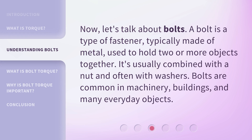Now let's talk about bolts. A bolt is a type of fastener, typically made of metal, used to hold two or more objects together. It's usually combined with a nut and often with washers. Bolts are common in machinery, buildings, and many everyday objects.